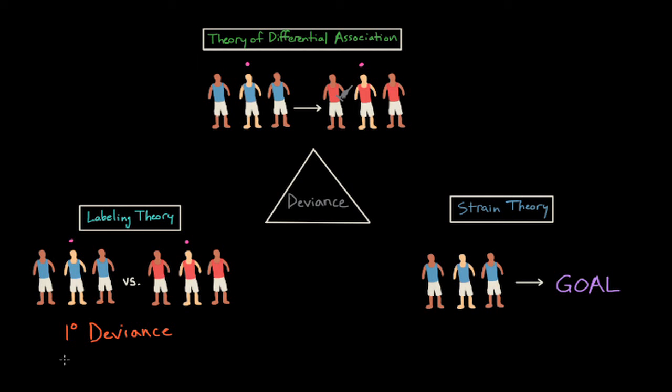However, an act labeled as secondary deviance can produce more serious consequences. Secondary deviance is characterized by a severe negative reaction that produces a stigmatizing label that can result in even more deviant behavior.